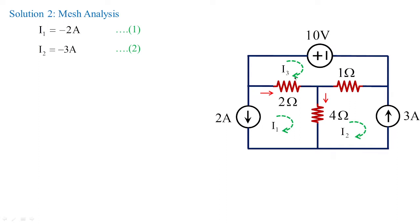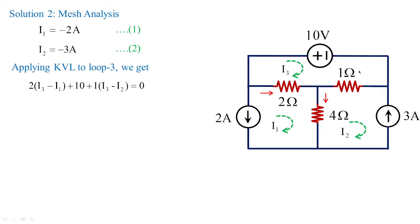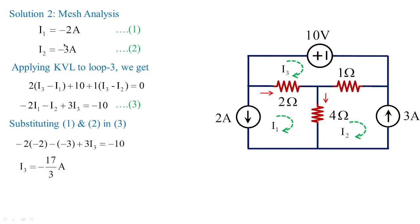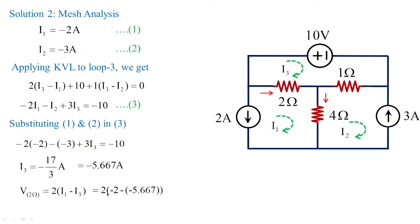Once we are done with loops 1 and 2, apply KVL to loop 3: 2·(i3 minus i1) + 10 + 1·(i3 minus i2) = 0. Substituting the values of i1 and i2 gives: minus 2·i1 minus i2 plus 3·i3 = minus 10. Substituting i1 = minus 2 and i2 = minus 3, this becomes 4 + 3 + 3·i3 = minus 10, so i3 = minus 17/3 = minus 5.667 amperes. The voltage across 2 ohms is 2 × (i1 minus i3) = 2 × (minus 2 minus (minus 5.667)) = 7.33 volts.